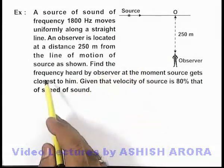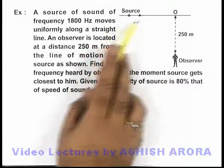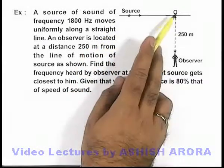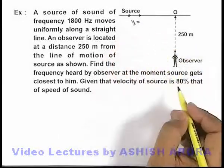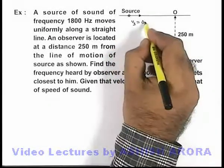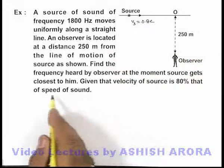We are required to find the frequency heard by the observer at the moment the source gets closest to him, that is at point O. It is also given that the velocity of the source is 0.8 times c, where c is the speed of sound.